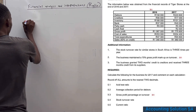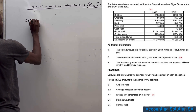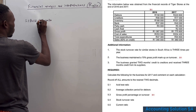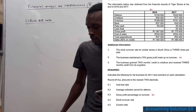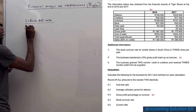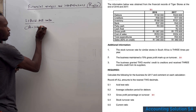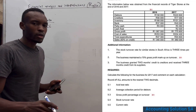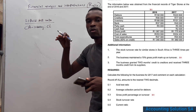Question 5.1 asks us to calculate the acid test ratio. The first step is to lay down the formula: current assets minus inventory, divided by current liabilities.